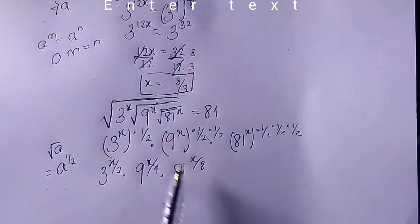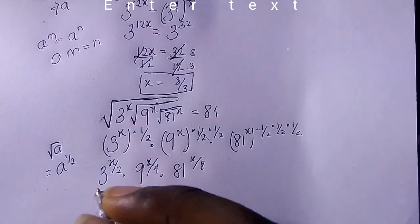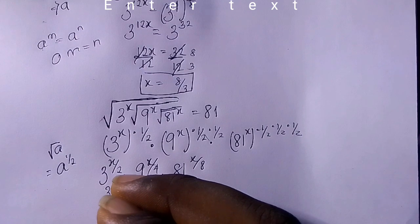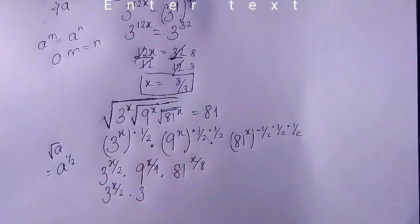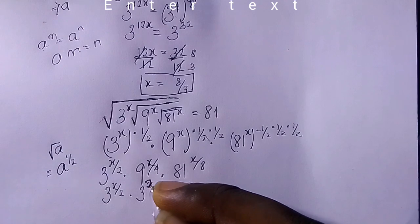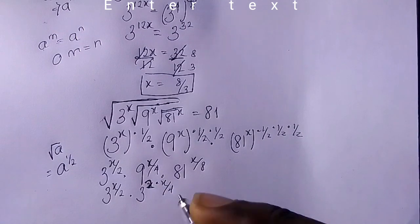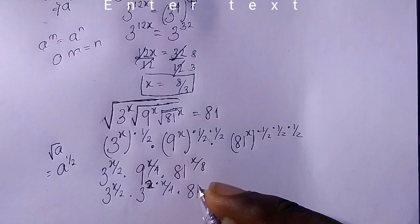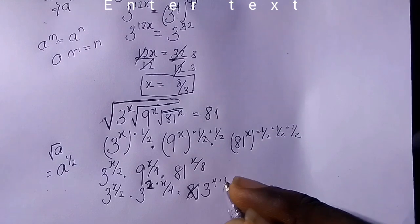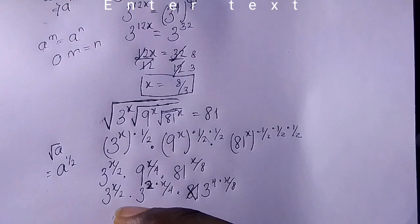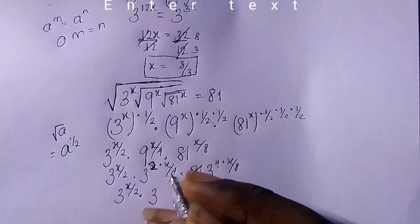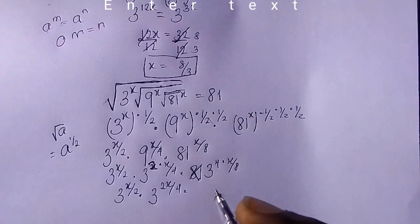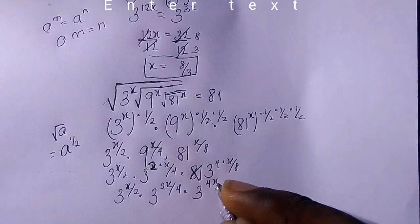So we have 3 raised to the power of x/2, multiplied by 9 — which is 3 squared — raised to the power of x/4, giving 3 raised to the power of 2×(x/4) = 2x/4. And 81, which is 3 to the power of 4, raised to the power of x/8, giving 3 raised to the power of 4×(x/8) = 4x/8. So we have 3 to the power of x/2, times 3 to the power of 2x/4, times 3 to the power of 4x/8.